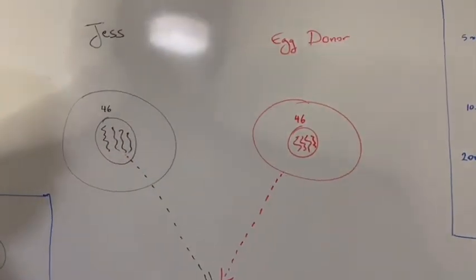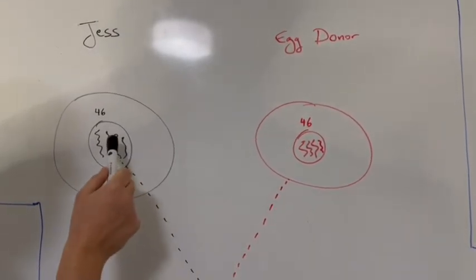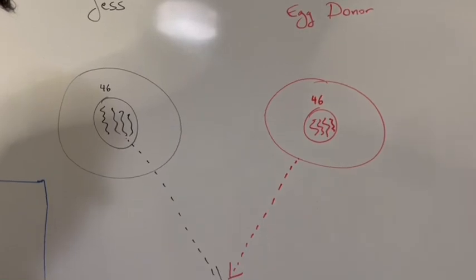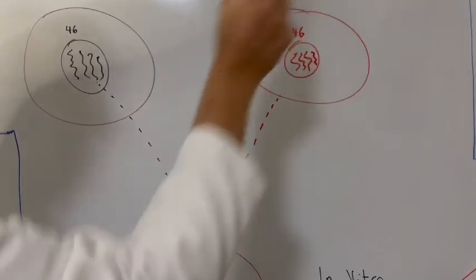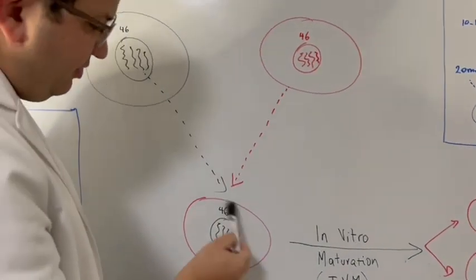So the egg donor comes and gives her an egg. Then Jess takes her nucleus where the DNA is and then takes only the white of the egg donor. And we discard this one and then we fuse that.